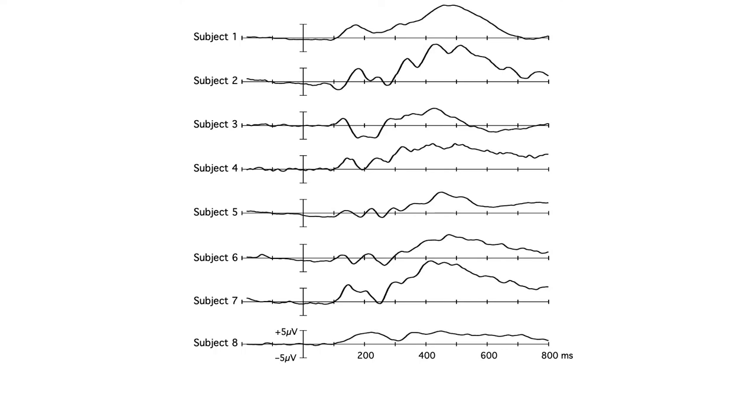Another thing you should be aware of is that ERP papers don't usually show single-subject ERP waveforms. Again, this is largely to avoid overwhelming the reader with a million squiggly lines. Here we have the average ERPs from only 8 subjects in a single condition, and it's already a lot of information.